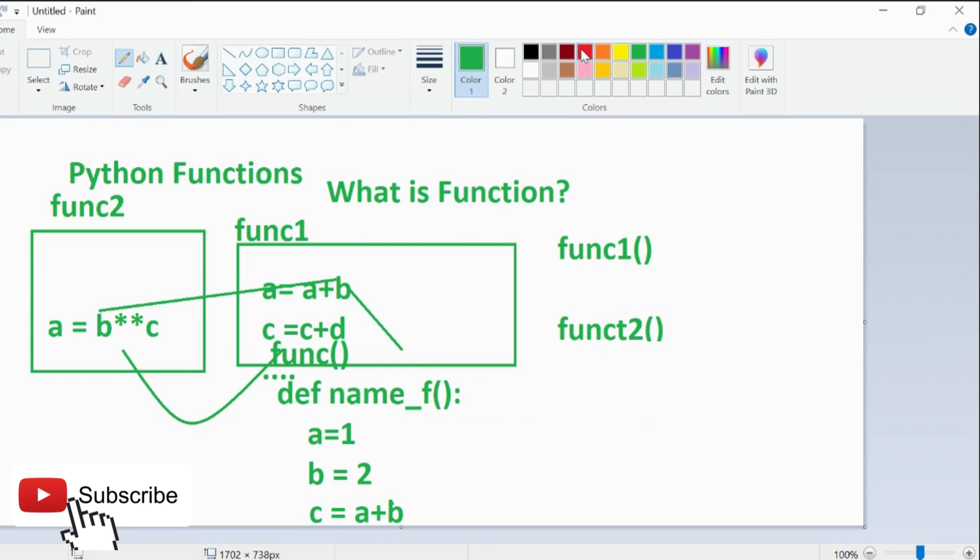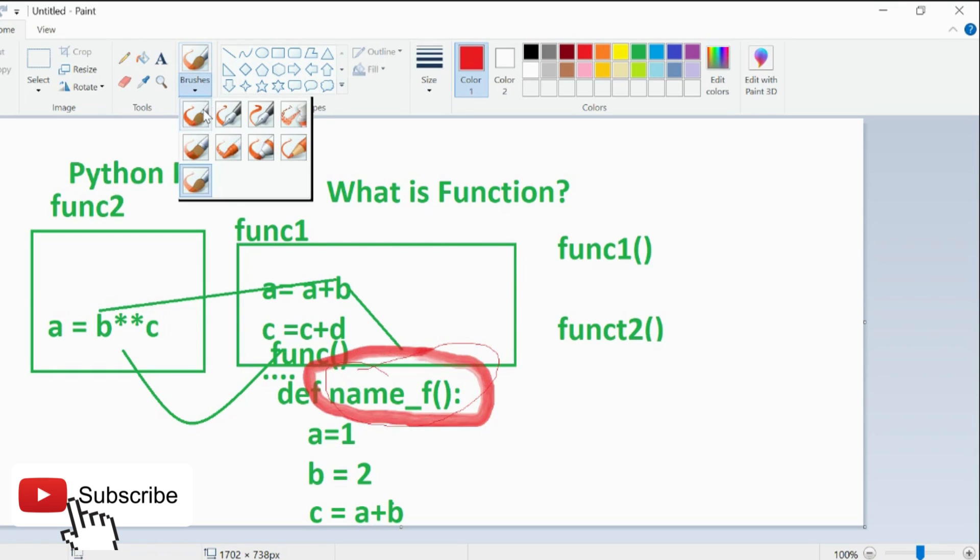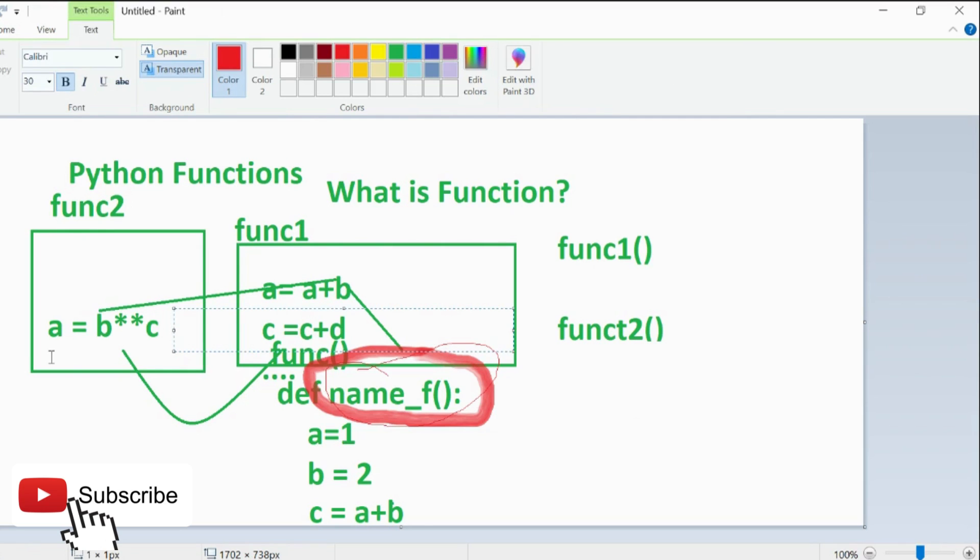This function is something which has a reusability capability and you can call this function from anywhere you want to. For example, I am writing another function, maybe this function only. And if I name this is function2 and I want to call this as name_f, I will just simply at the end of this here I will write name_f. And remember these brackets have a special power. You can take variables or not. If you want to pass, let's say a from this function, then you can simply pass the value of a.